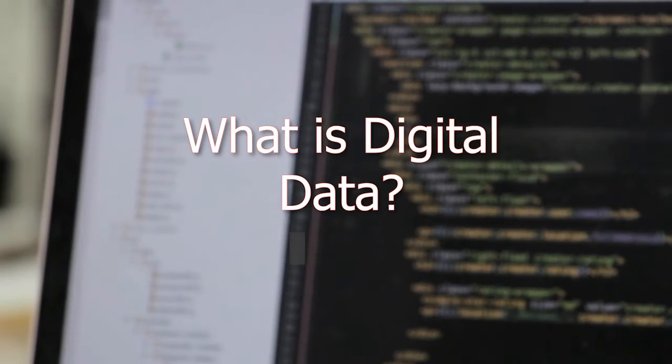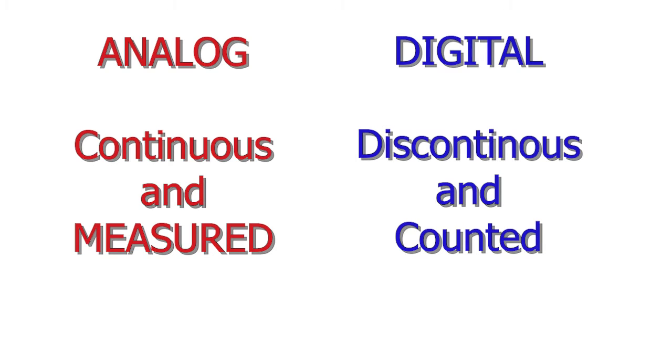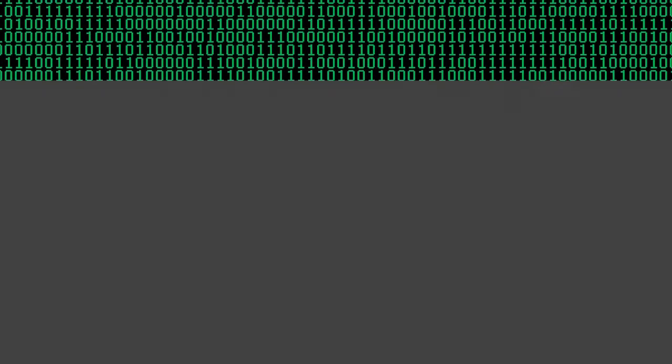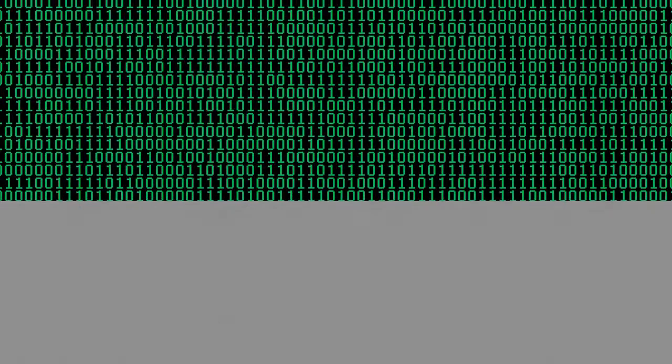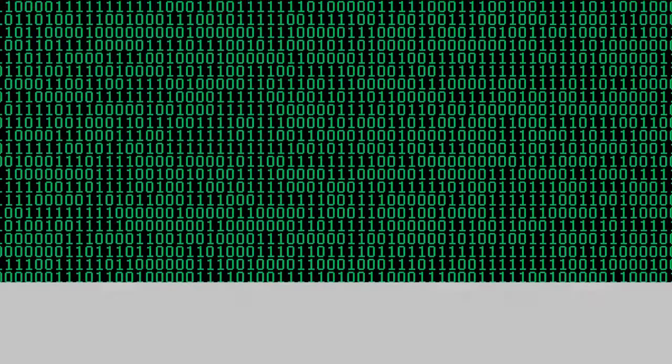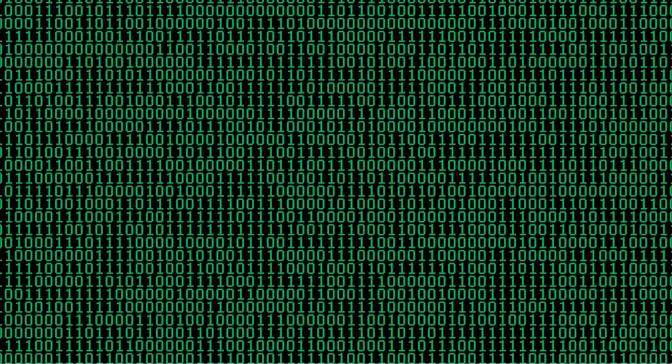So what exactly is digital data? Digital data is a discontinuous form of data. While analog is a nearly identical representation of the information that it carries, digital data represents its information with a value using numbers, and instead of being measured, it is counted. Binary is one of the most common forms of digital data, using a base two system of ones and zeros, ons and offs, or any other two distinguishing symbols.